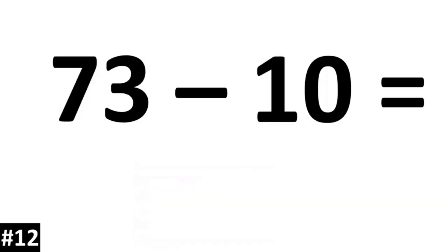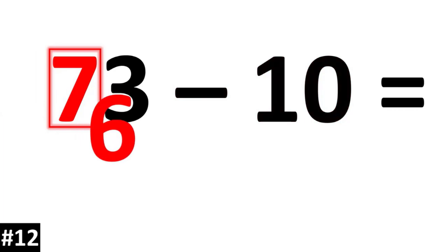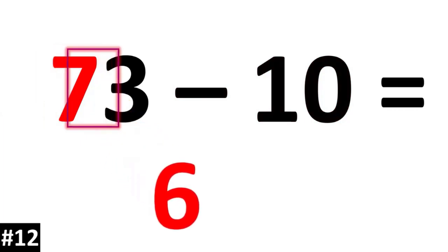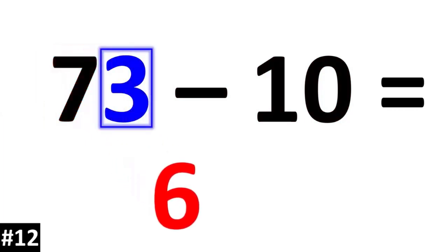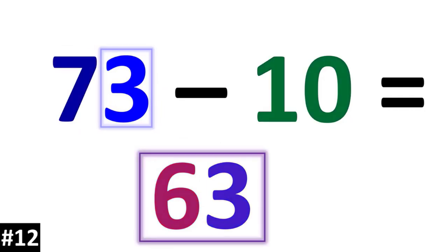73 minus 10. The tens value of 7 is going to go down to 6. The other number stays the same, so 73 minus 10 is 63.